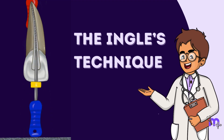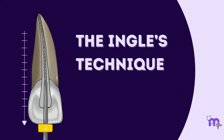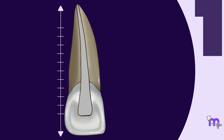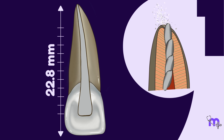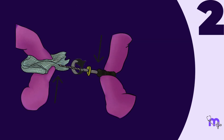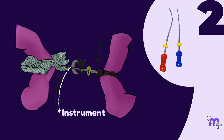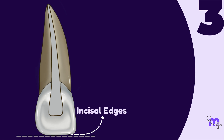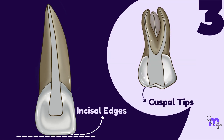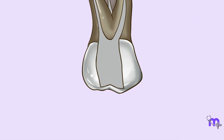The Ingle's technique. To accurately measure the working length using this method: firstly, you should know the average length of the tooth to prevent the forcing of debris or bacteria into the periradicular tissues. Secondly, the instrument must be pre-curved by bending the blade using a gauze sponge to accommodate the canal curvature. Thirdly, you must have a stable occlusal reference point — such as the incisal edges for anteriors or the cuspal tips for posteriors.